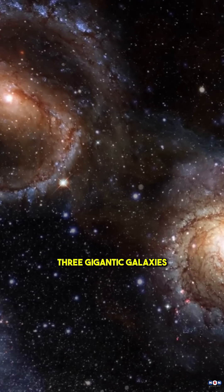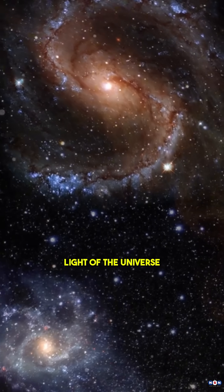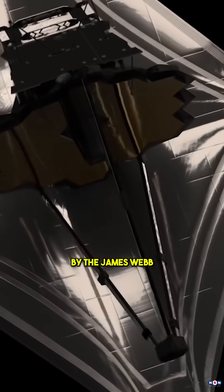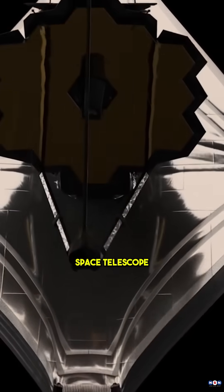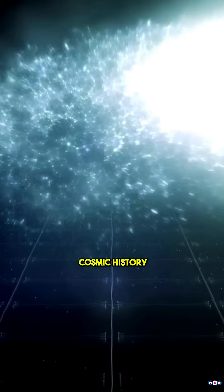Three gigantic galaxies, hidden in the earliest light of the universe, have just been discovered by the James Webb Space Telescope, and they're rewriting cosmic history.